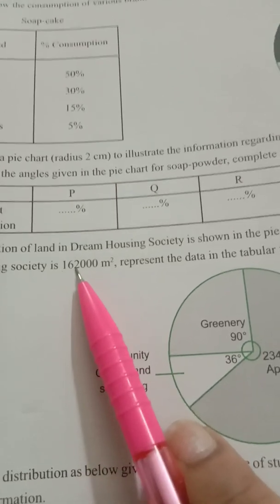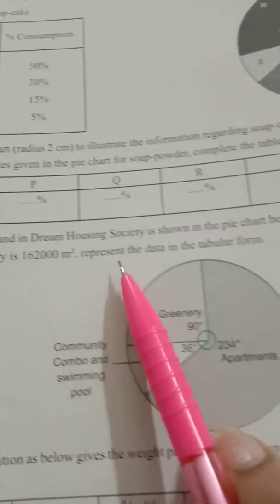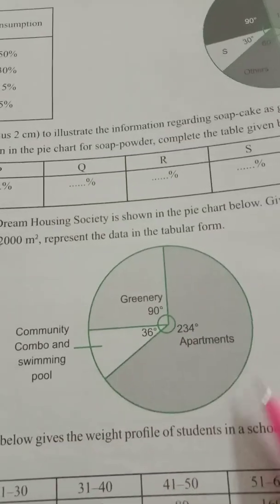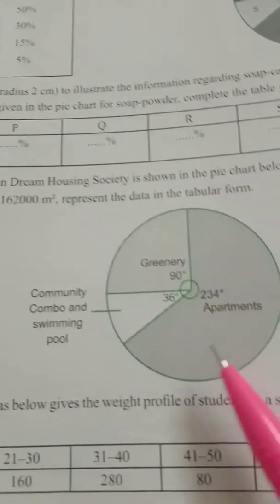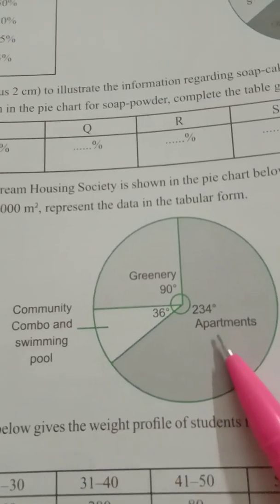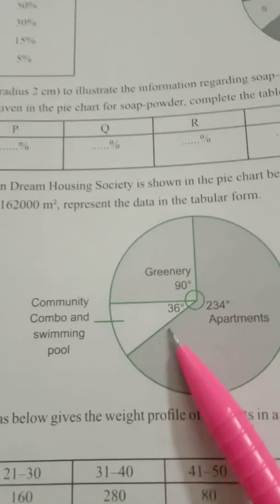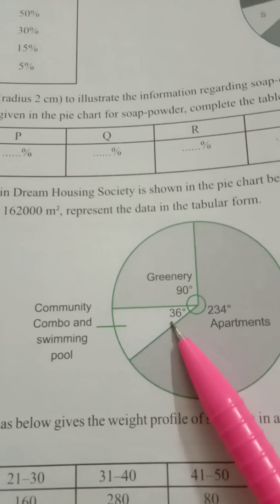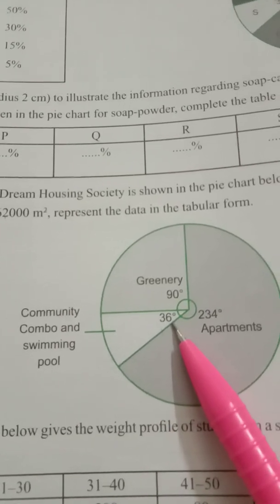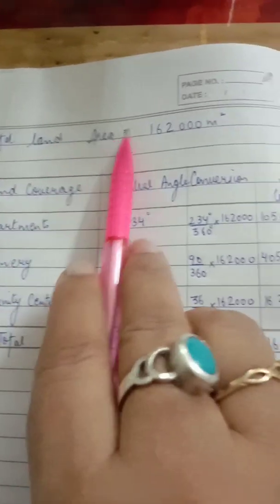Pie graph is already given, we have to make a table. Let's first read the pie graph. Apartments: 234 degrees. Greenery: 90 degrees. Community combo and swimming pool: 36 degrees. Now how to make a table? Total land area is 1 lakh 62,000 meters square.